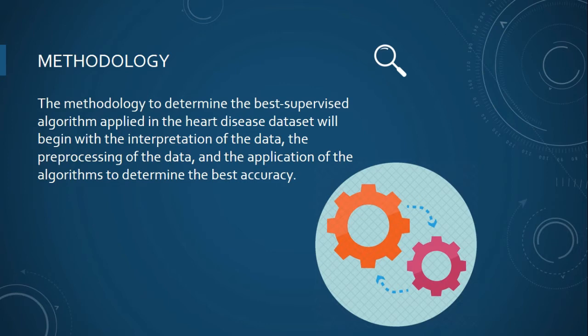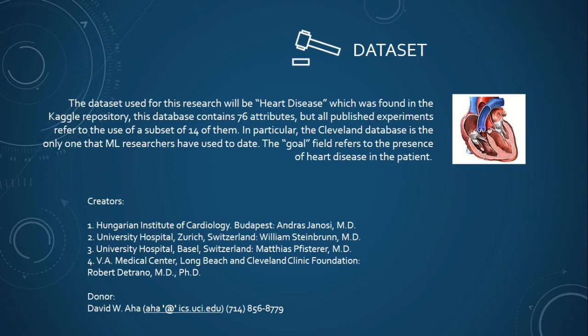But all published experiments refer to the use of a subset of 14 of them. In particular, the Cleveland database is the only one that machine learning researchers have used to date. The goal field refers to the presence of heart disease in a patient. The creators of this dataset are the Hungarian Institute of Cardiology in Budapest, University Hospital Zurich, University Hospital Basel in Switzerland, and the Medical Center at Long Beach with Robert Detrano.